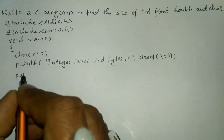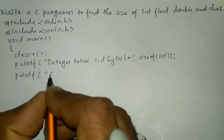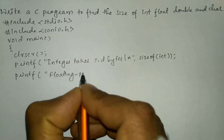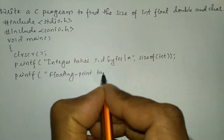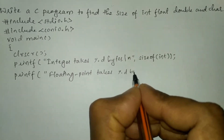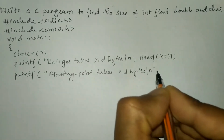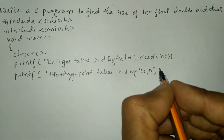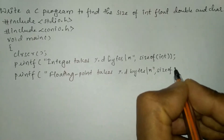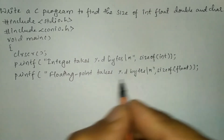Next I am going to write printf and in double quotation marks I will write: floating point takes percentage d bytes backslash n. Similarly we will write sizeof and inside the bracket I am going to write float, closing bracket, and put semicolon.